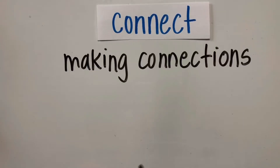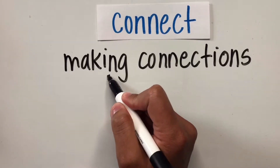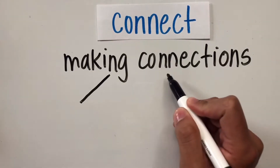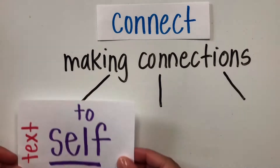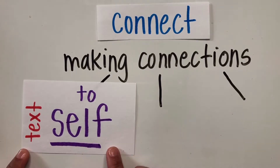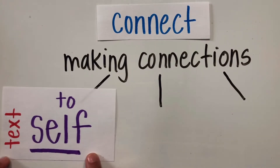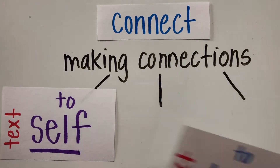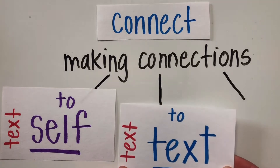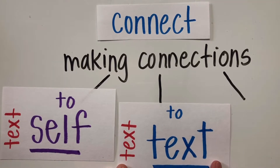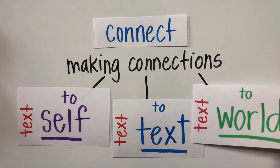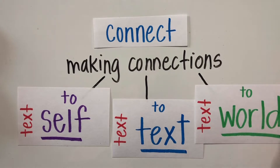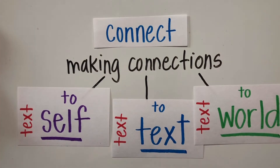There are three types of connections that we can make with the text. We can use the text to make connections to ourself. We can make connections with another text that we have read. And we can use the text to make connections to the world. Let's take a look at each of these three closely.